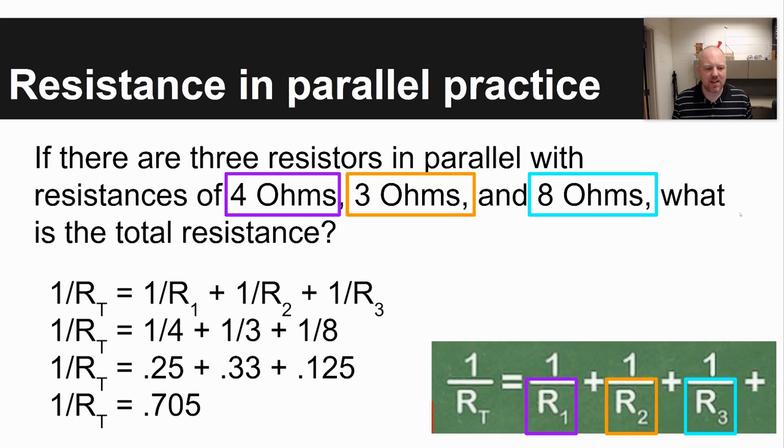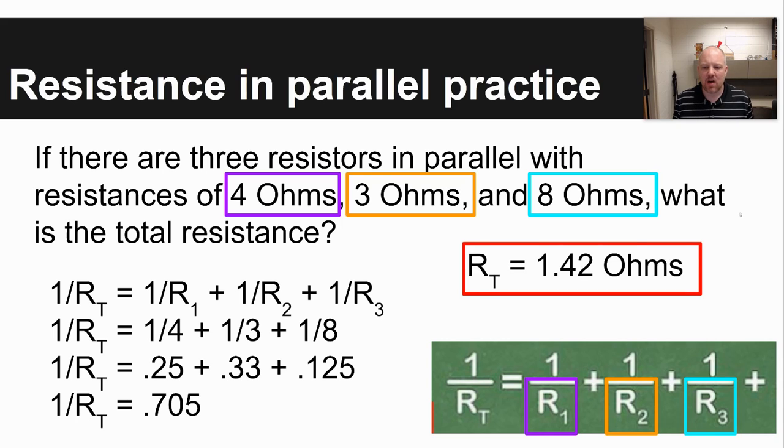Again, that's not your final answer, though. That is not resistance total. That's 1 divided by resistance total. And so then what you need to do with that last step is hit that 1 over X button on your calculator, which would give you an answer of 1.42 ohms as your total resistance.